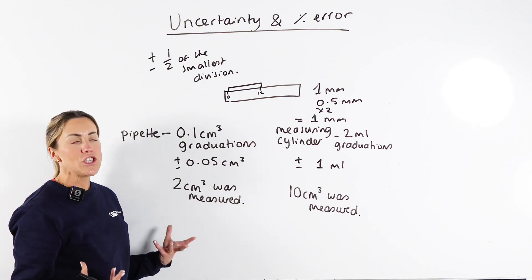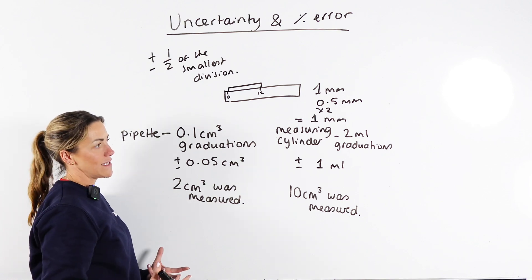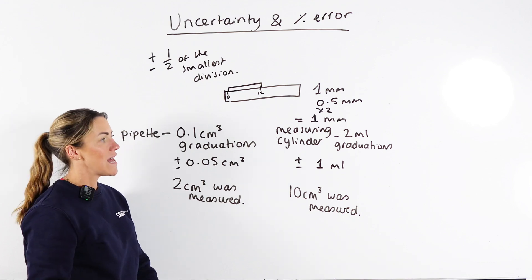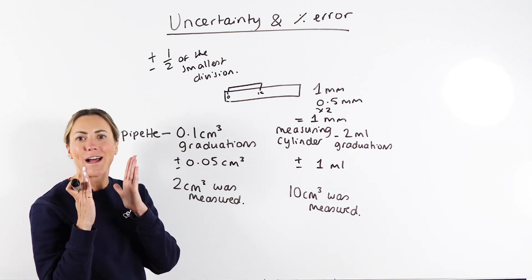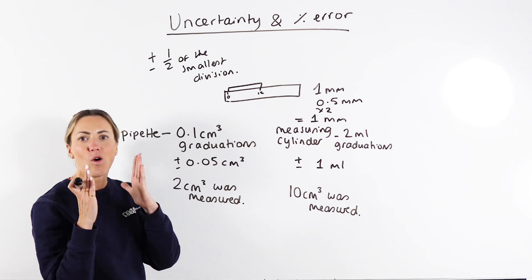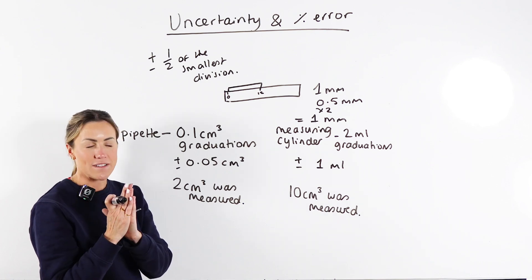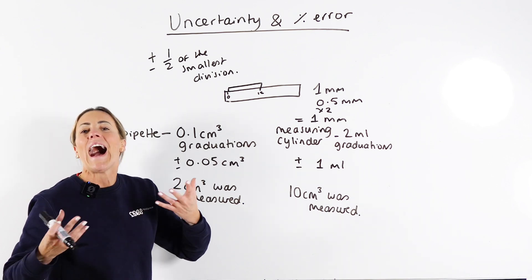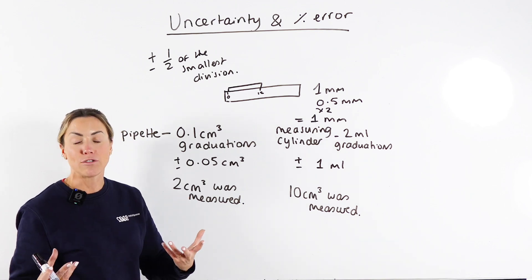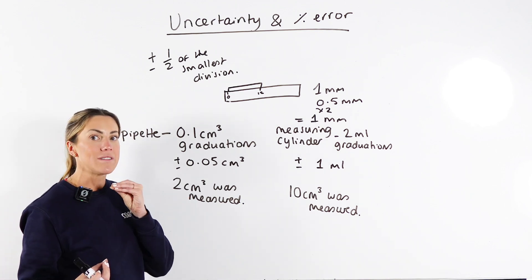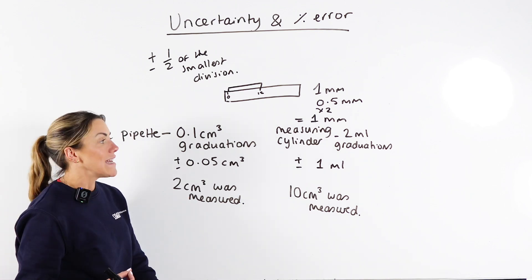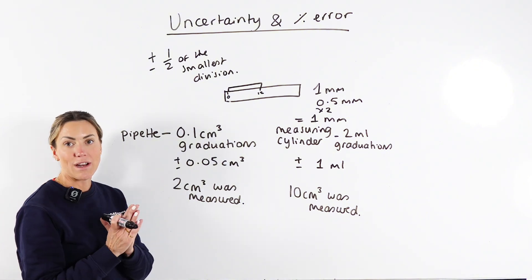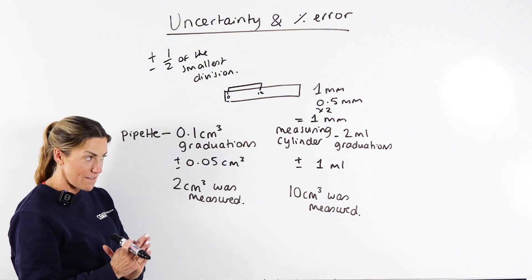Now, how can you reduce this uncertainty? You need to use a piece of apparatus that has smaller graduations or smaller divisions — it's like using a higher resolution. What the mark scheme will want you to say is: use a piece of apparatus that has smaller graduations or smaller divisions.